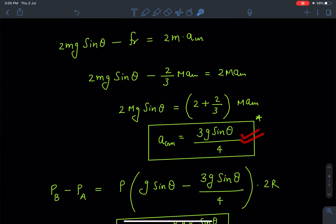So this will be the value of acceleration of the shell which is 3g sinθ/4. This will be the acceleration for the liquid as well. Now once we know this acceleration of center of mass, we can substitute the value of a_CM in the expression of P_B - P_A.